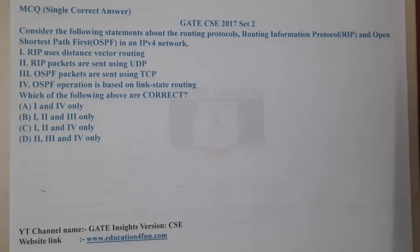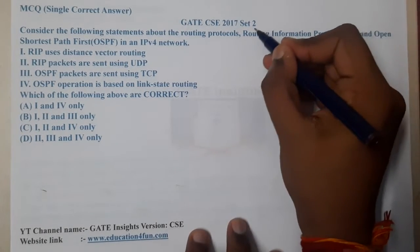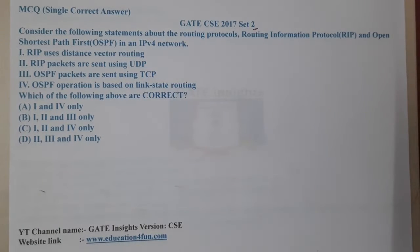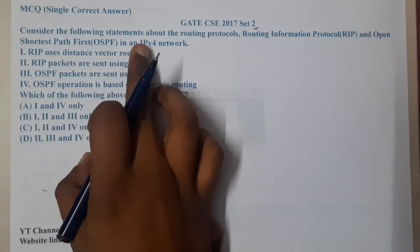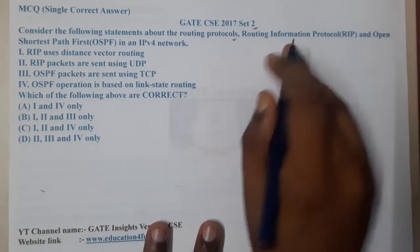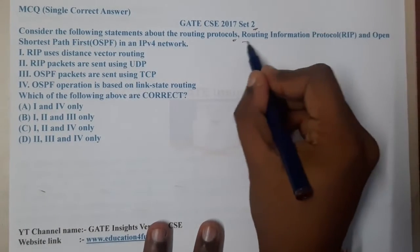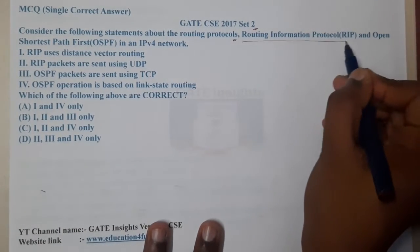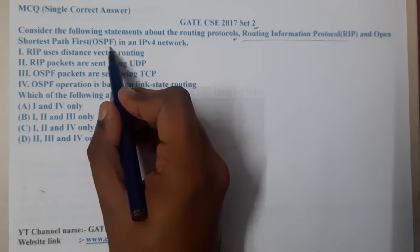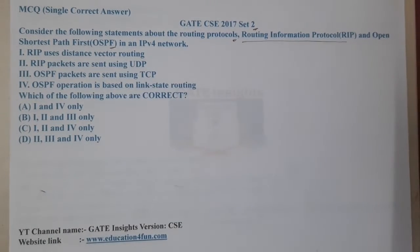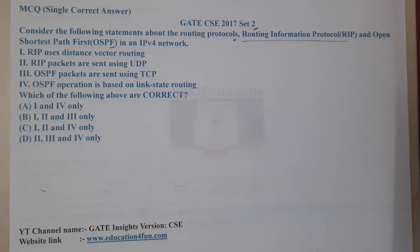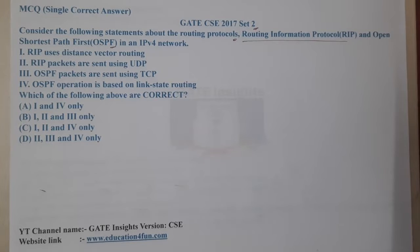Hello guys, we are back with our next lecture. This question belongs to GATE CSE 2017 Set 2. The given question asks us to consider the following statements about the routing protocols RIP (Routing Information Protocol) and OSPF (Open Shortest Path First) in an IPv4 network.